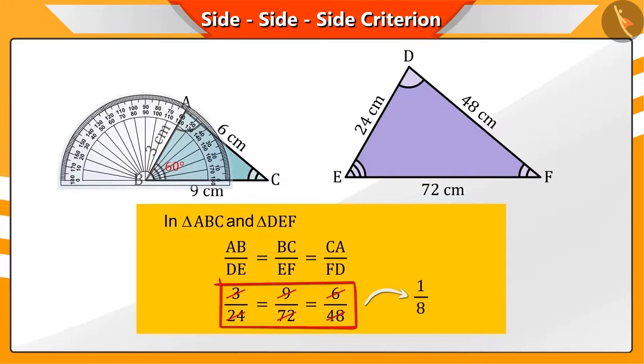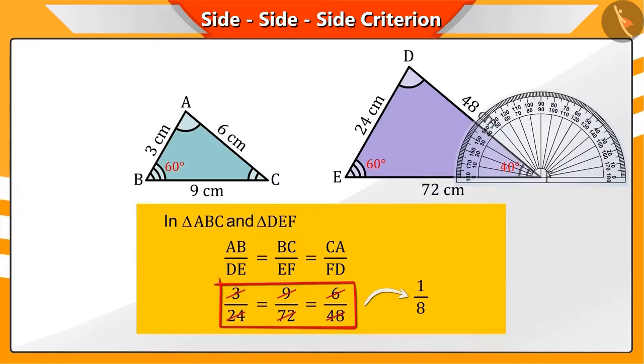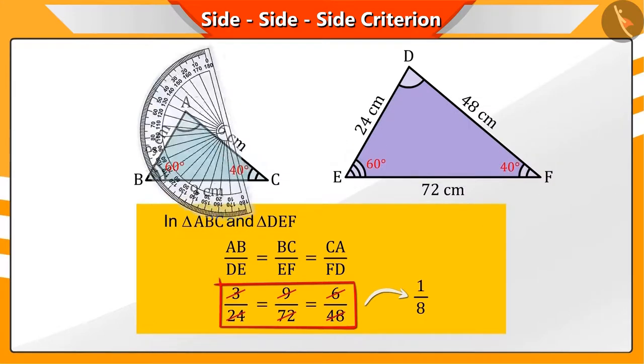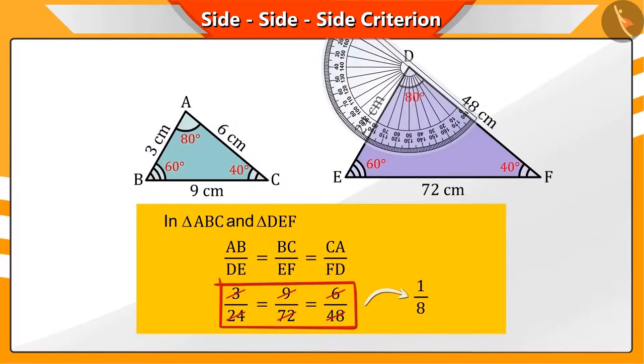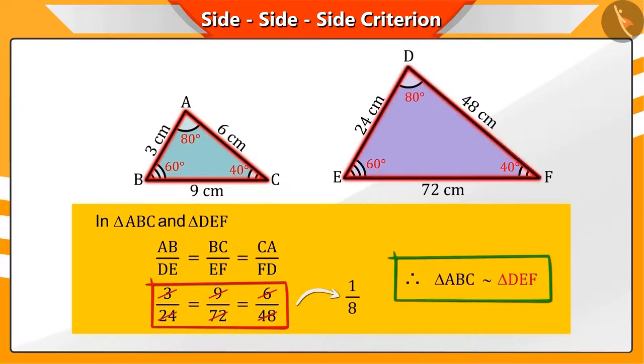And, if we talk about the angles then, the corresponding angles of these triangles are also equal. This way, we can say that triangles ABC and DEF are also similar.